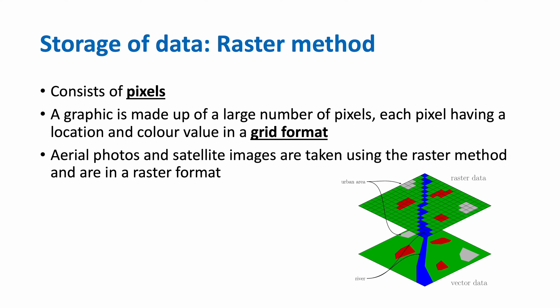Let's now look at how we store GIS data. The first method is the raster method, which consists of pixels. A graphic is made up of a large number of pixels, with each pixel having a location and color value in a grid format. Aerial photos and satellite images are taken using the raster method and are in a raster format.